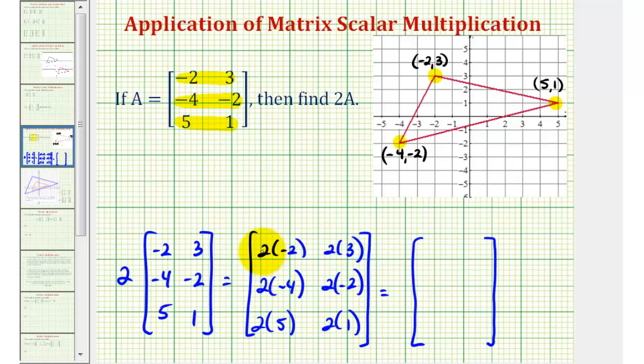For row 1, we have negative 4, 6. For row 2, we have negative 8, negative 4. And for row 3, we have 10, 2.